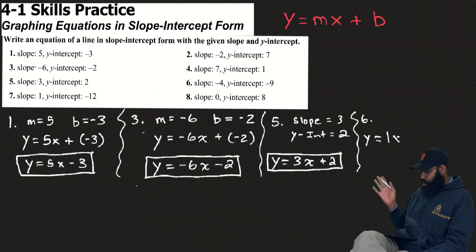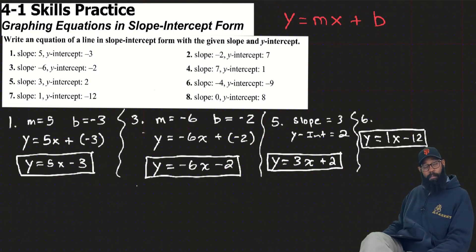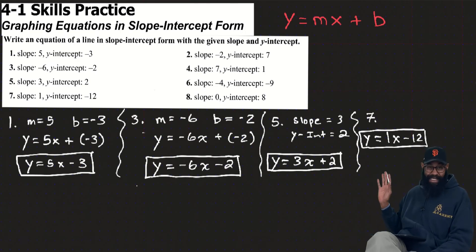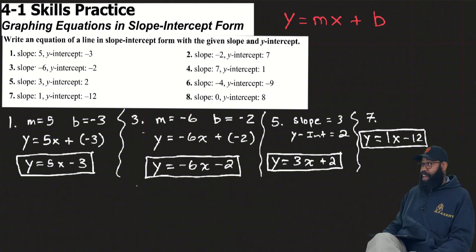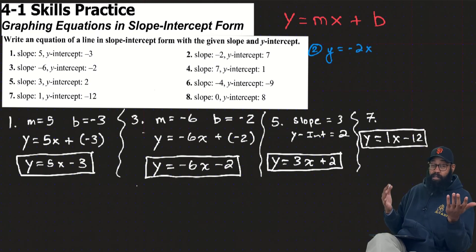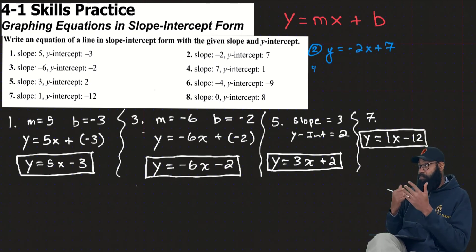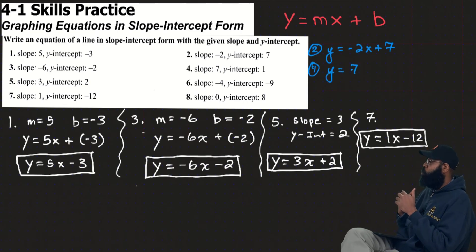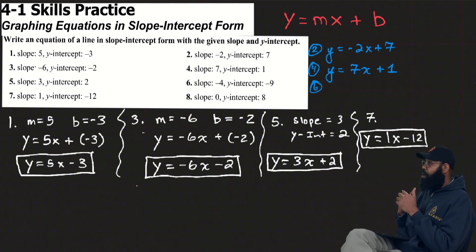Number 7: y-intercept is negative 12. y equals mx plus b — simple as can be. And for numbers 2, 4, 6, and 8: slope is negative 2, so negative 2x. Y-intercept is 7. Number 4: y equals 7x plus 1. Number 6: y equals negative 4x minus 9.